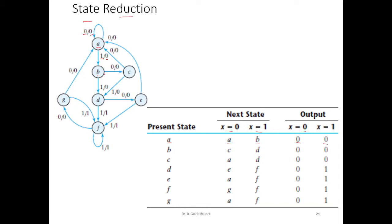Similarly, we can write for other states too. From B, if we get a 0 we go to state D and output 0. From B, when the input is 1 we go to state D and output 0. Similarly, we can write all the transitions among the states.